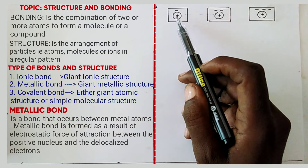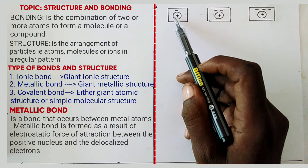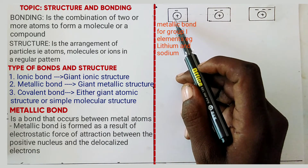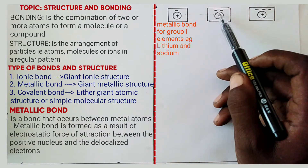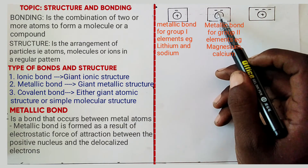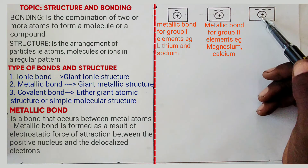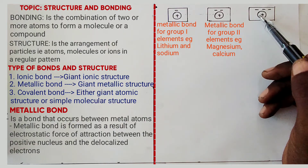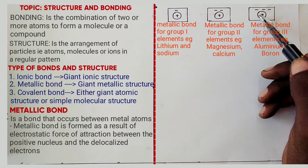This applies to any element which has got one valence electron, e.g. silver, sodium, lithium and potassium. The next applies to those elements which have two valence electrons, which include any group 2 elements, or copper, barium. And this one belongs to those elements which have three valence electrons, which include group 3 elements, aluminium, boron.